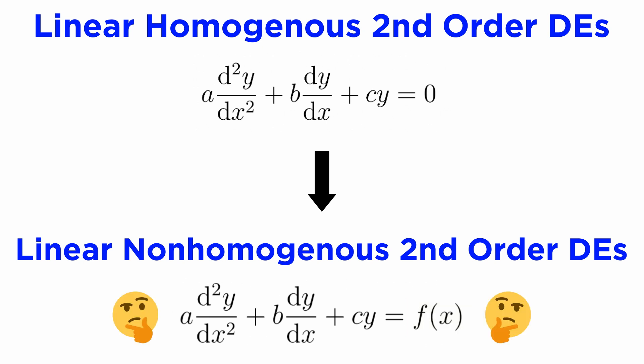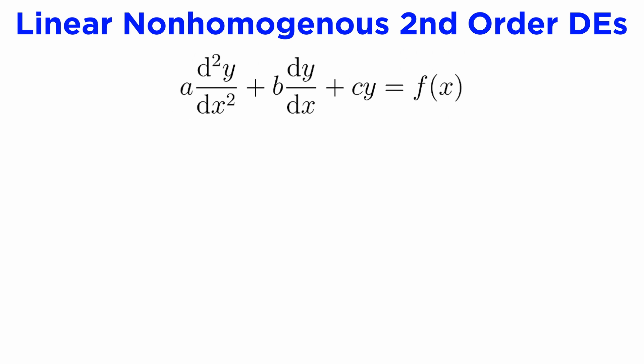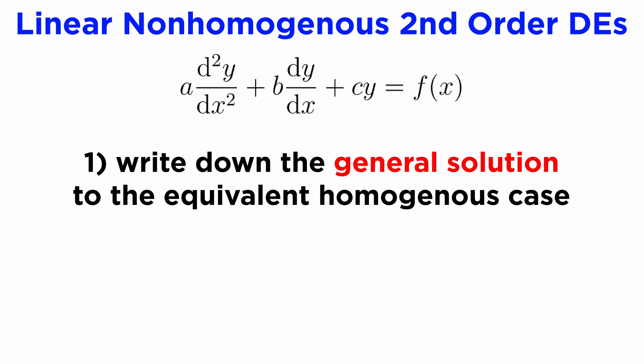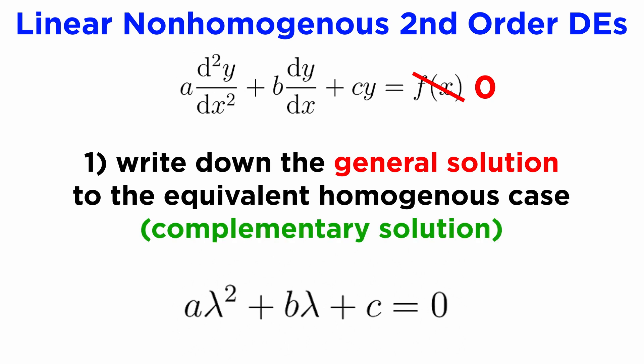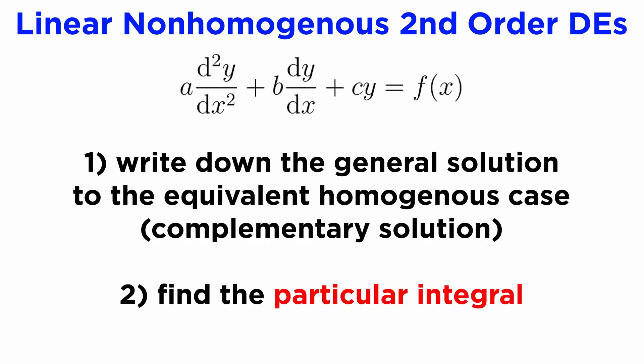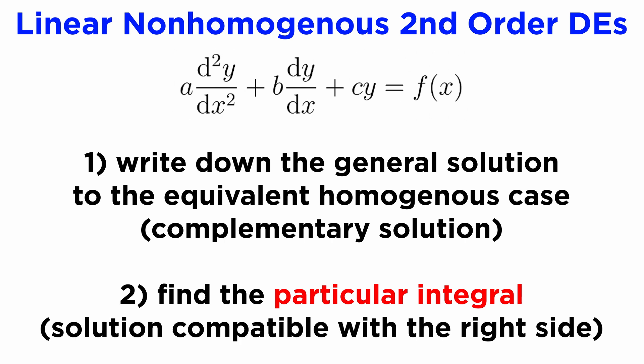How do we solve something like this? Firstly, you'll be glad to know that the way we solved the homogeneous case in the last tutorial will come in very handy here. The first thing we do when faced with a non-homogeneous second-order DE is write down the general solution to the equivalent homogeneous case by pretending for a moment that the right side of our DE is zero, and then using the characteristic equation method we learned previously. This is known as the complementary solution because it's the easy part that we get for free. What we now need is something called a particular integral, which is a solution to our actual DE that is compatible with the right side, f. There are two different methods of doing this, and we'll illustrate both of them with the same example.